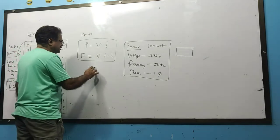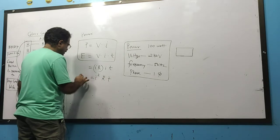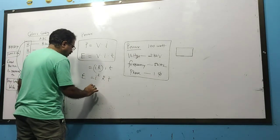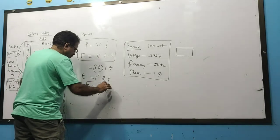You can change this. V is equal to I into R into I T. So it will become I square R into T. You can write V upon R, then V square upon R into T.